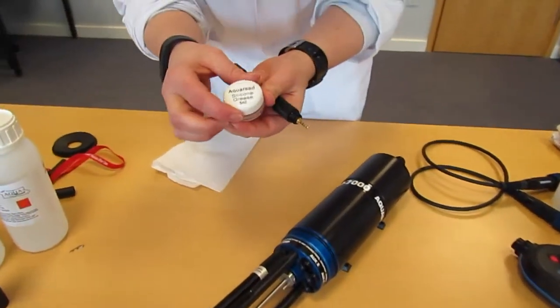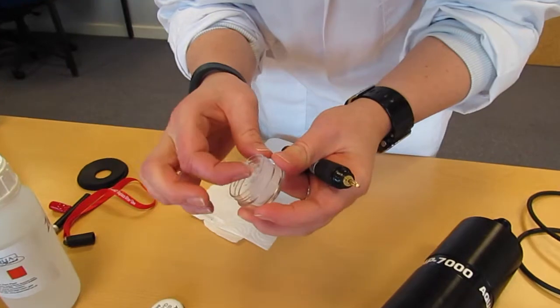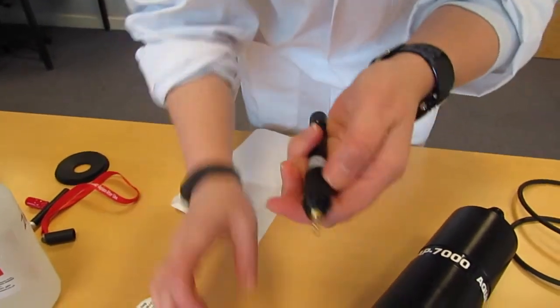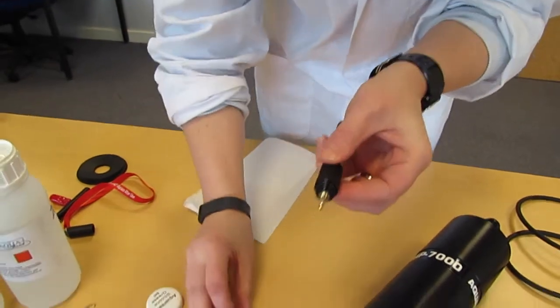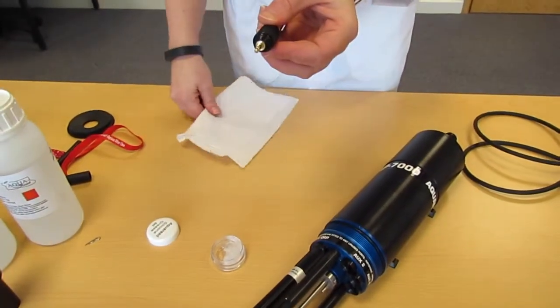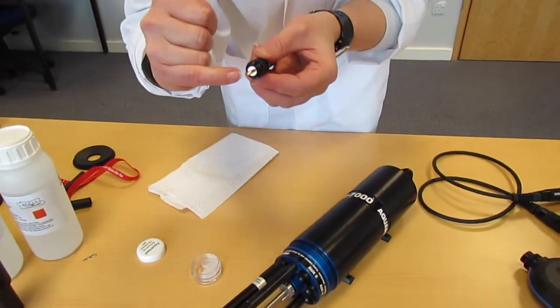We then take the silicon grease and apply a small amount to the black threaded part of the electrode, making sure that we don't get any on the gold terminal.